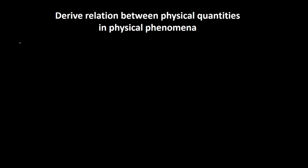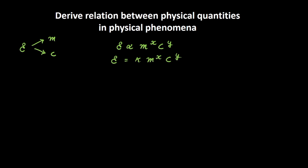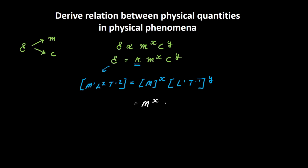Let's take another example: finding the relationship between energy, mass, and c, where c is the speed of light. We say energy is directly proportional to mass raised to the power x and c raised to the power y, so E = k · Mˣ · cʸ. The dimensional formula for energy is M¹L²T⁻². Applying dimensions: M¹L²T⁻² = Mˣ · (L¹T⁻¹)ʸ, which simplifies to Mˣ · Lʸ · T^(−y).